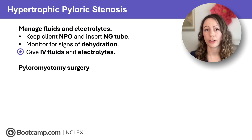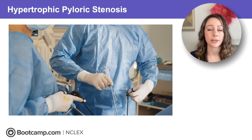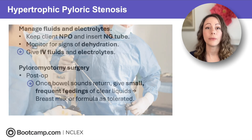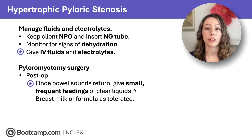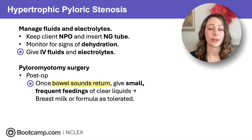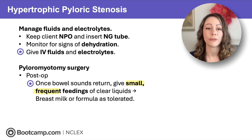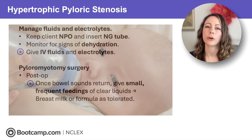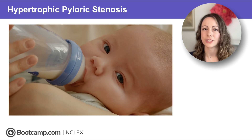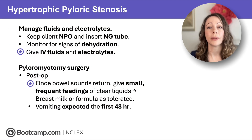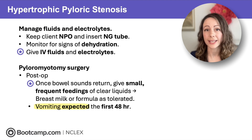This is treated with pyloromyotomy surgery, which opens up that thickened sphincter. Post-operatively, once bowel sounds return — indicating return of bowel function — we give small frequent feedings, starting with clear liquids and progressing to breast milk or formula as tolerated. Vomiting is expected in the first 48 hours, but anything that persists beyond that should be reported.